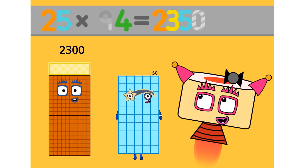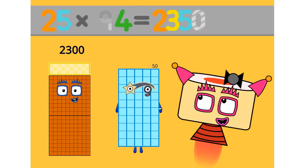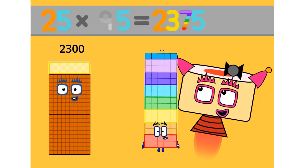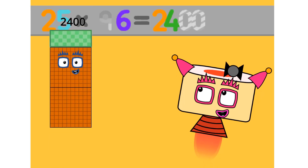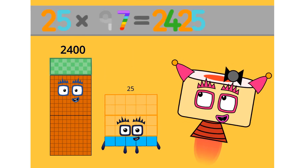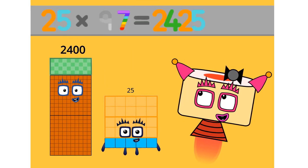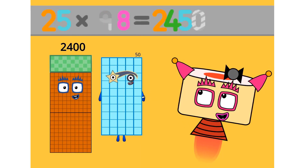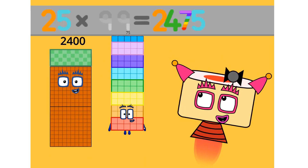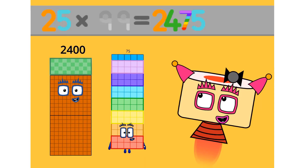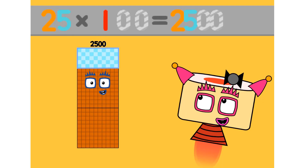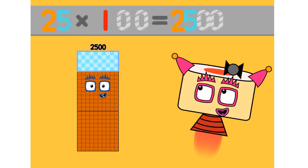25 times 94 equals 2350. 25 times 95 equals 2375. 25 times 96 equals 2400. 25 times 97 equals 2425. 25 times 99 equals 2475. 25 times 100 equals 2500.